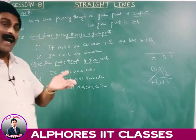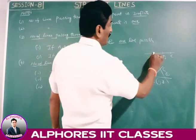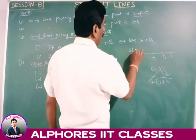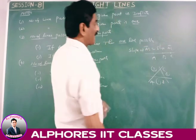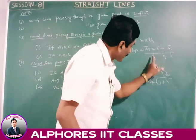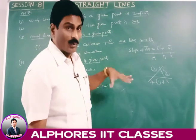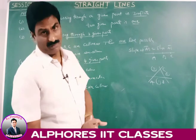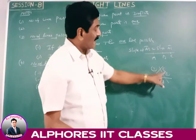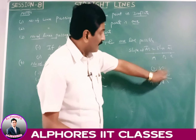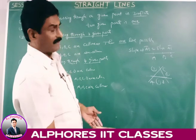How to identify collinearity: if the slope of AB equals the slope of AC, then A, B, C are collinear; if not equal, they are non-collinear. Alternatively, if the area of the triangle formed by A, B, C is 0, then they are collinear.